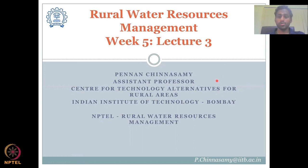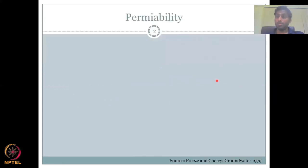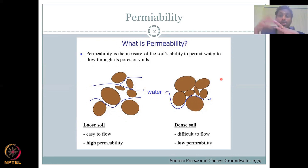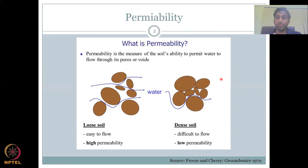With a small intro, let us get into today's topic: permeability. We discussed hydraulic conductivity briefly in the previous week, and in this current week we looked at specific yield and porosity. The other more related parameter is permeability. As the name suggests, how do you define permeability? Permeability is the measure of the soil's ability to permit water to flow through its pores or voids. That ability of the soil to permit is called permeability.